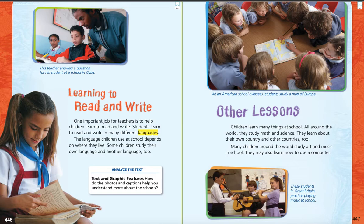Then we have the heading: Other Lessons. Children learn many things at school. All around the world, they study math and science. They learn about their own country and other countries, too. Many children around the world study art and music in school. They may also learn how to use a computer. Now we learn how to use iPads and tablets, too, right? And down at the very bottom, we have a picture that says, these students in Great Britain practice playing music at school.